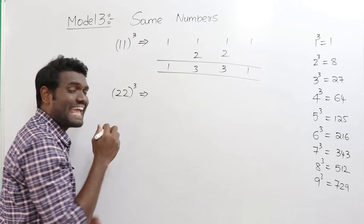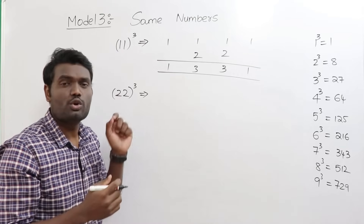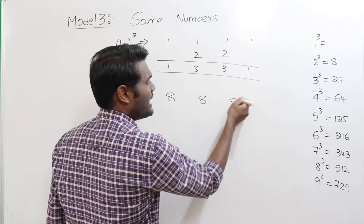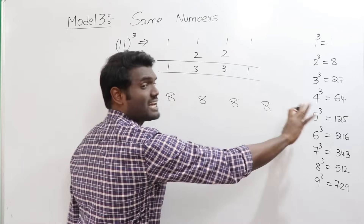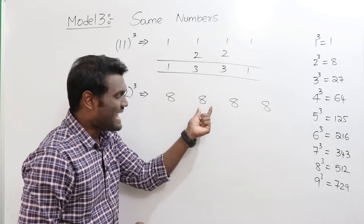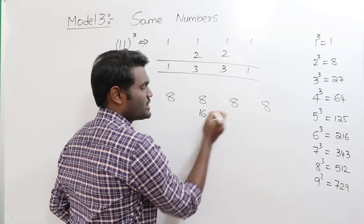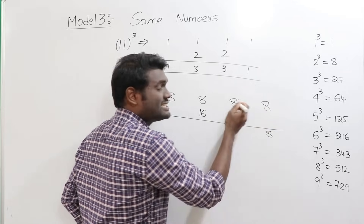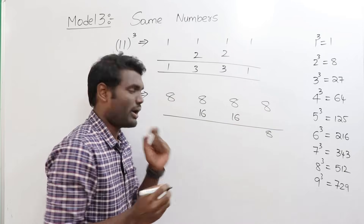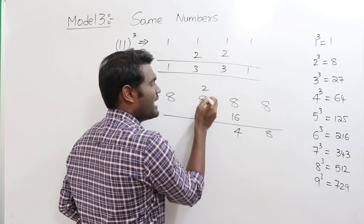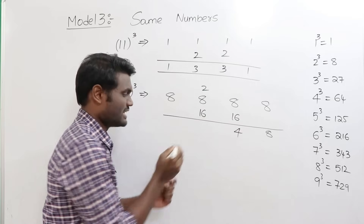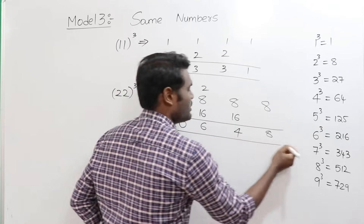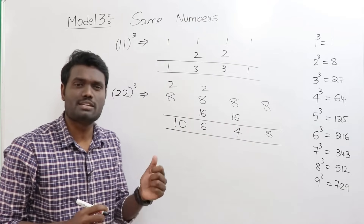Let's try 22 cubed. Take one digit and cube it: 2 cubed is 8. Write it four times: 8, 8, 8, 8. Leave first and last, double the middle: double 8 is 16, double 8 is 16. Adding: 8; 16 plus 8 is 24 — write 4, carry 2; 8 plus 2 carry is 10, plus 16 is 26 — write 6, carry 2; 8 plus 2 is 10. So 22 cubed equals 10648.